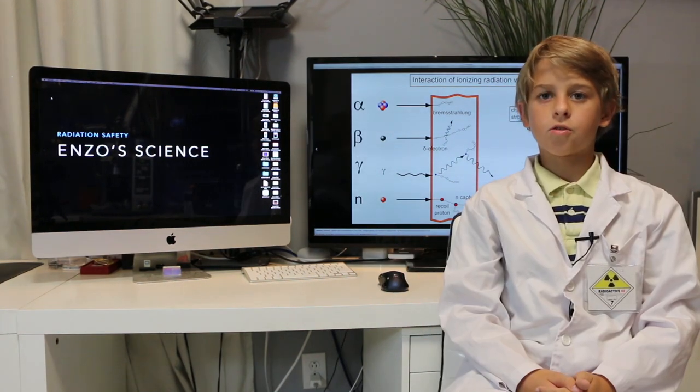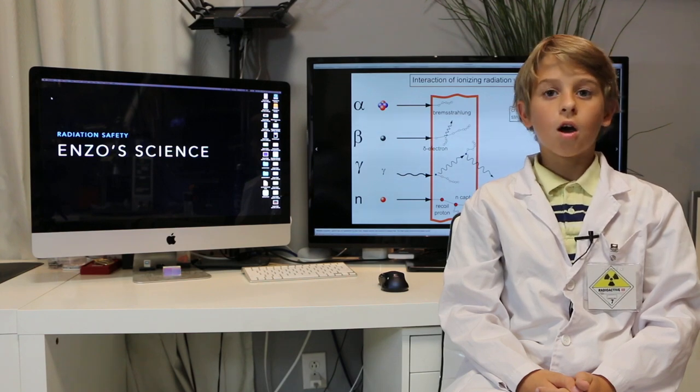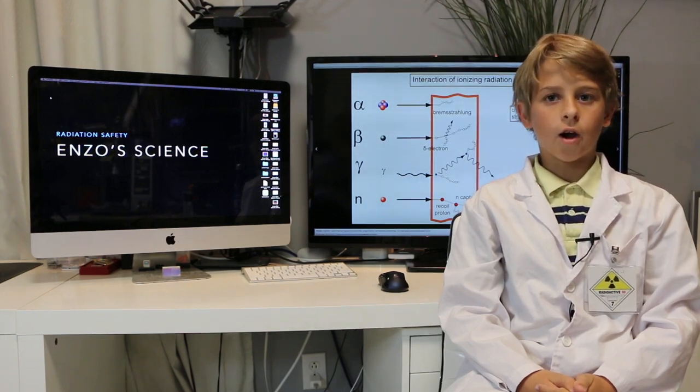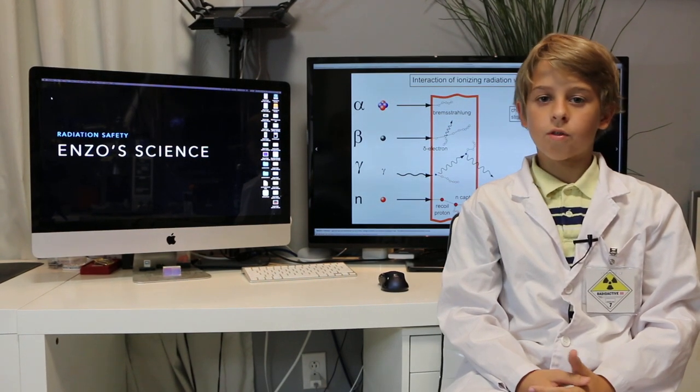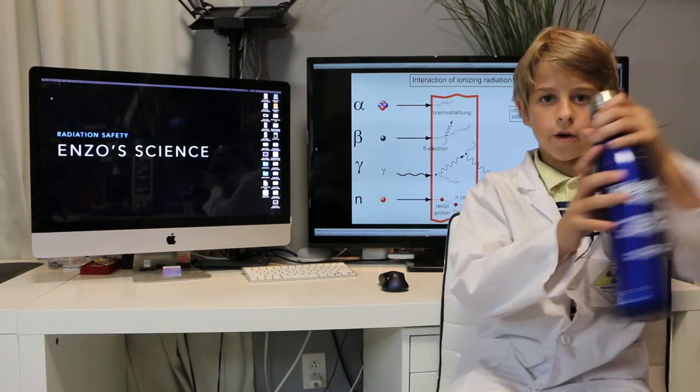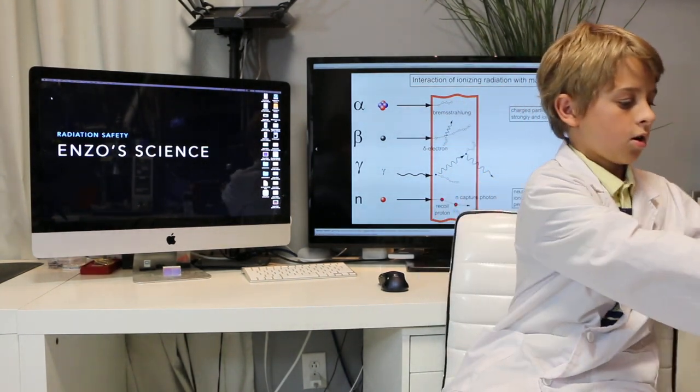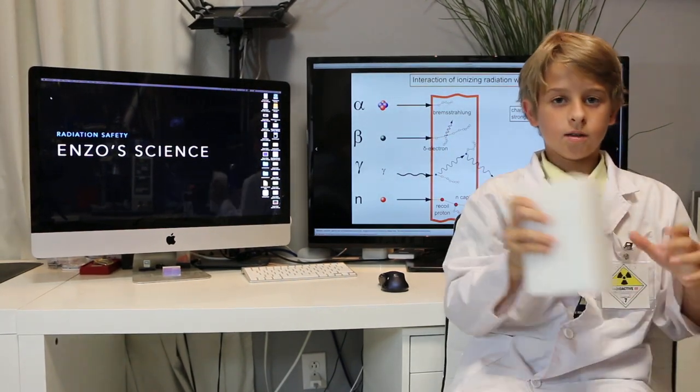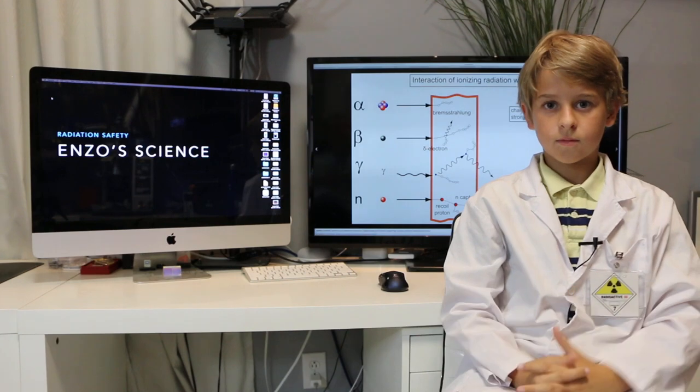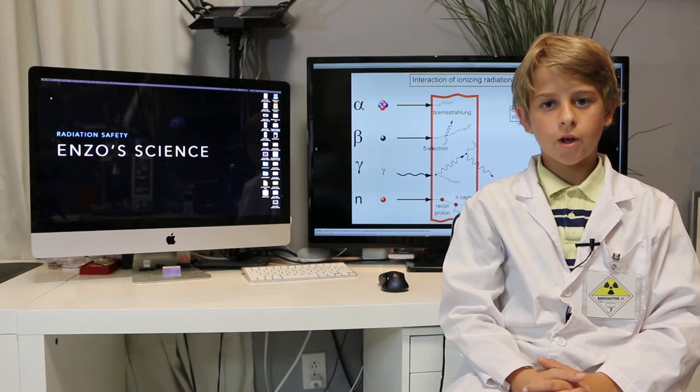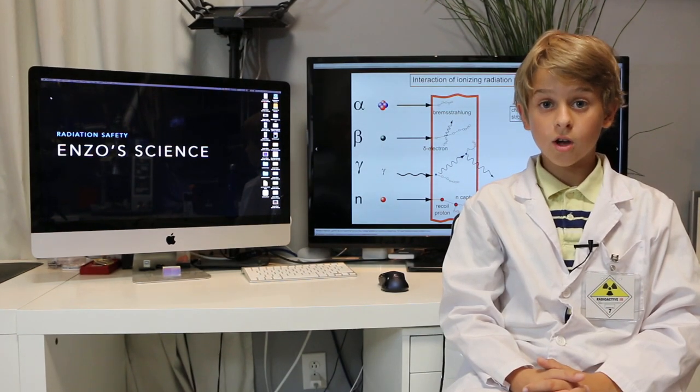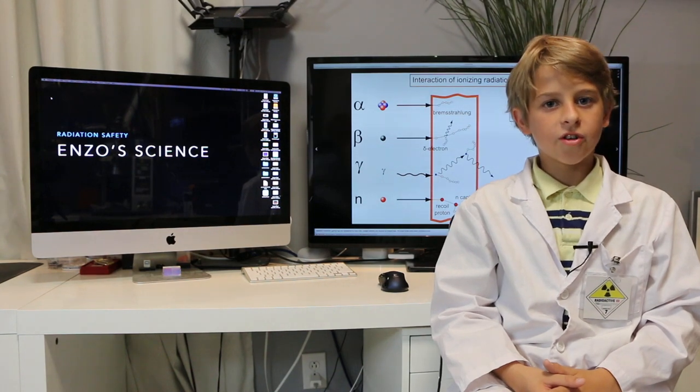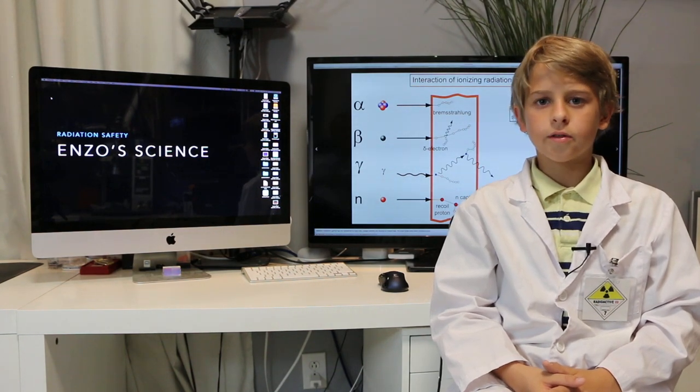Last but certainly not least neutrons. Very high energy, no charge, very hard to stop. Some of the things that can stop it are things with very high hydrogen content such as water, paraffin wax, and HDPE. The reason neutrons are so dangerous is because they can change the nucleus of an atom. Now that we know what radiation is let's figure out how to safely handle it.